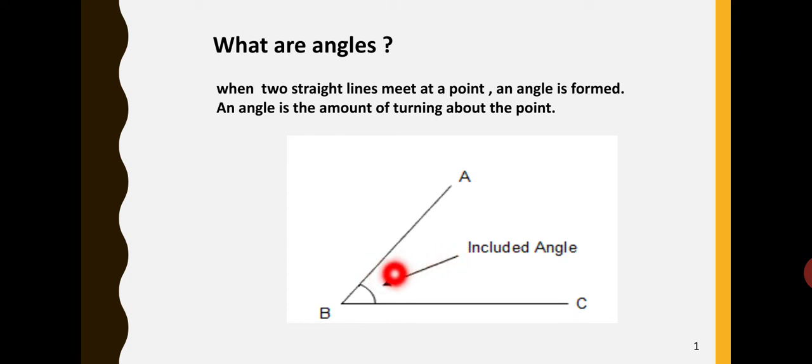You have to look at the arrow and included angle means that here is an angle. It is the amount of turning about the point. You have to turn as much as you.